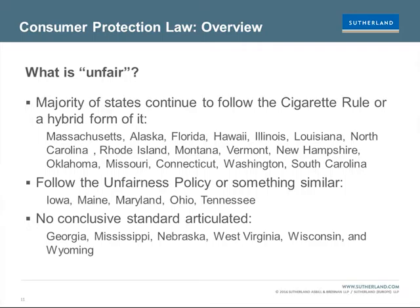The majority of states still continue to follow the cigarette rule or a hybrid form of it — states like Massachusetts, Alaska, Florida, Hawaii, Illinois, and others. However, a few states follow the unfairness policy, which is less restrictive, including Iowa, Maine, Maryland, Ohio, and Tennessee. Then there are states that still have not articulated a conclusive standard, such as Georgia, Mississippi, Nebraska, West Virginia, Wisconsin, and Wyoming. Some of these states have received attention for their weak consumer protection laws.